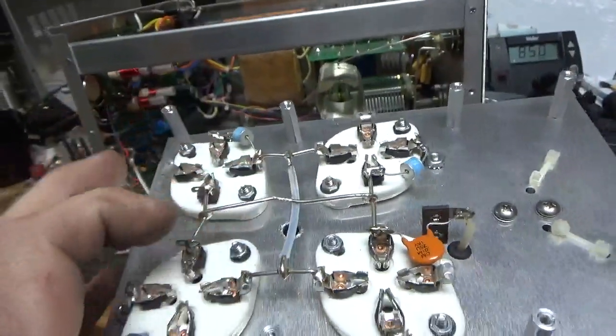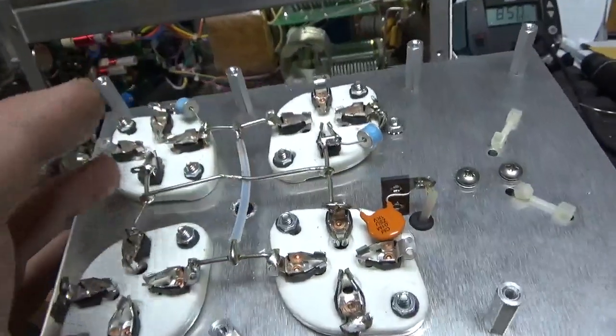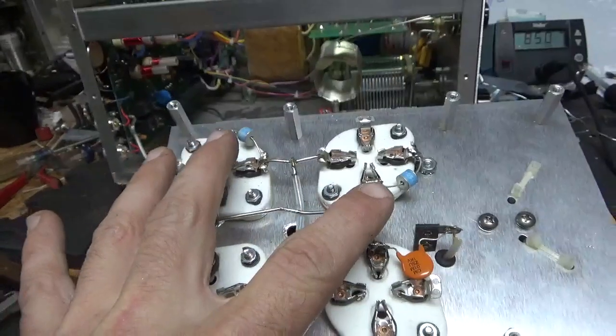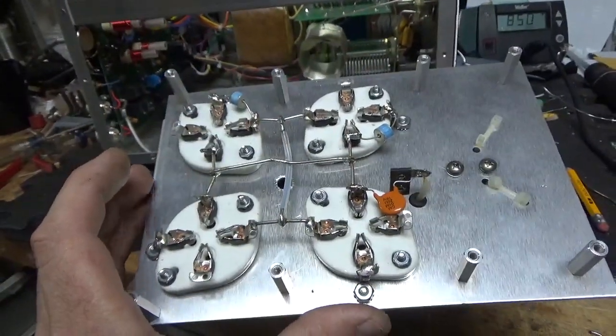Had a couple bad solder joints on the filament connections, so I fixed those. Each grid is grounded directly to the metal, and I added the two gas discharge tubes. So this thing is good to go.